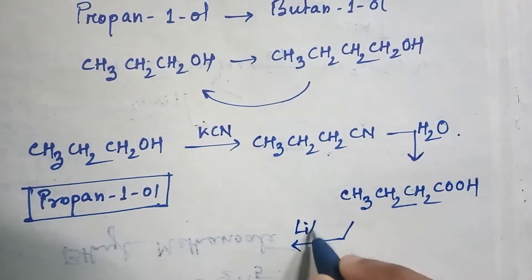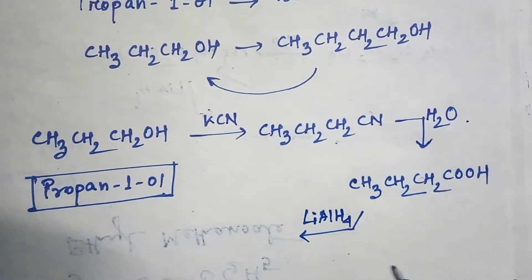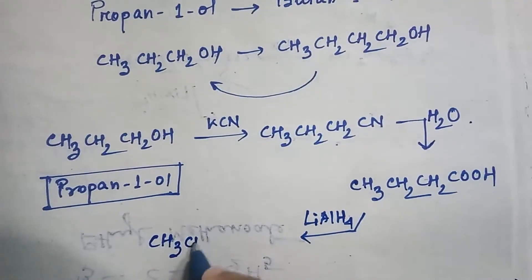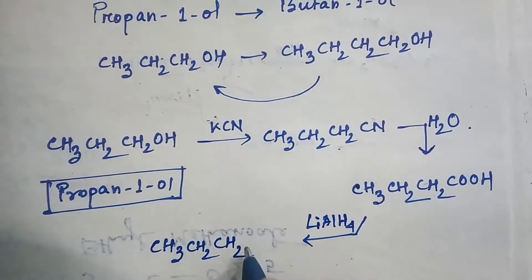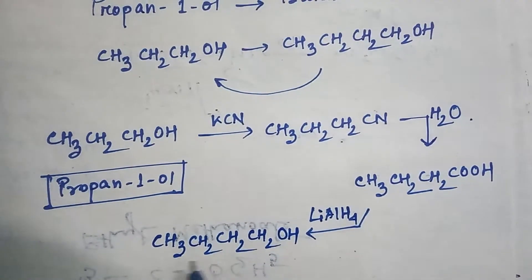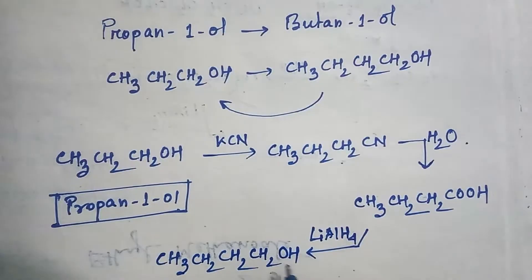Now in butanoic acid, if you do reduction by using lithium aluminum hydride, then this acid will convert into alcohol and the product will be CH3-CH2-CH2-CH2-OH. Now you can see this one is butane-1-ol.